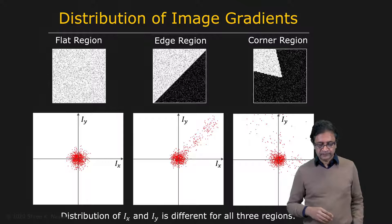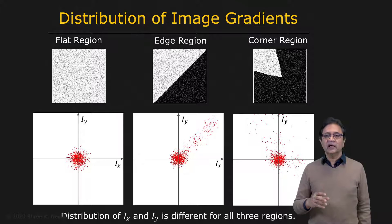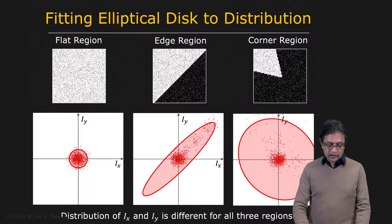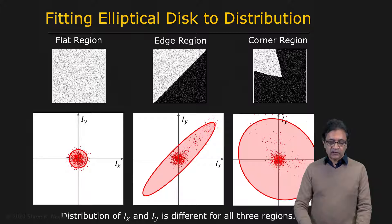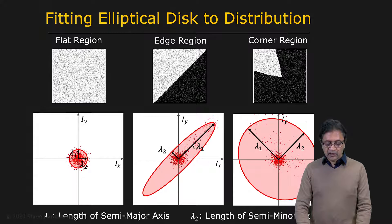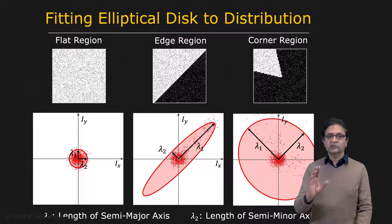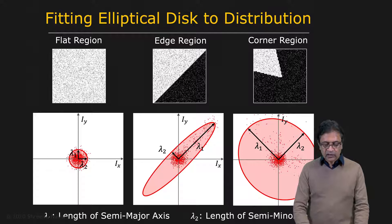The way we do that is by fitting an ellipse to the distribution. The ellipse is centered at the origin. Once we've done this, we end up with a semi-major axis for the ellipse, which is lambda 1, and a semi-minor axis, which is lambda 2. Based on just lambda 1 and lambda 2, we classify the region.